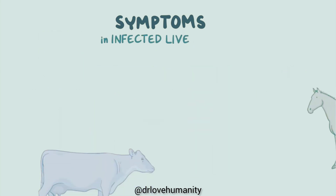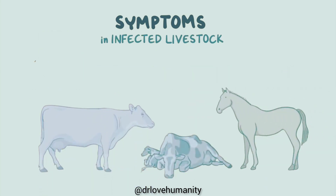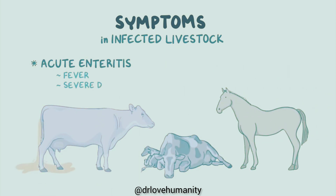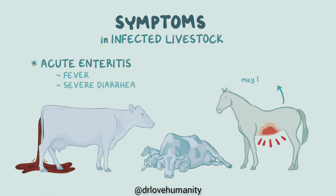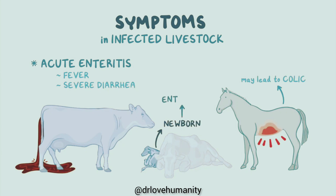In infected livestock, most adults have acute enteritis, with fever and severe diarrhea. In horses, abdominal pain may lead to colic. In newborn animals, enteritis is often followed by bacteremia.